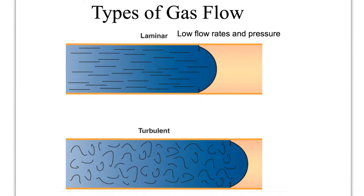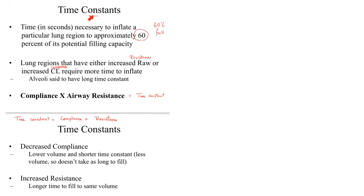We have two types of gas flow: laminar (smooth and beautiful) and turbulent (causing murmurs, crackles, and wheezing). What is time constant? Time constant is the time needed to inflate the lung to 63% of its capacity. The equation is: time constant = compliance × resistance.